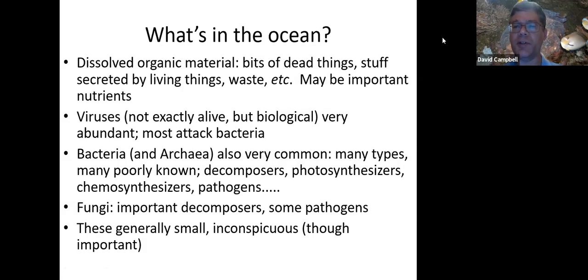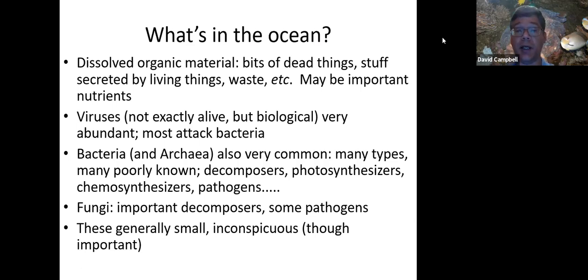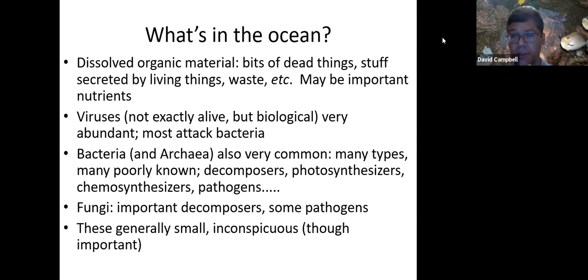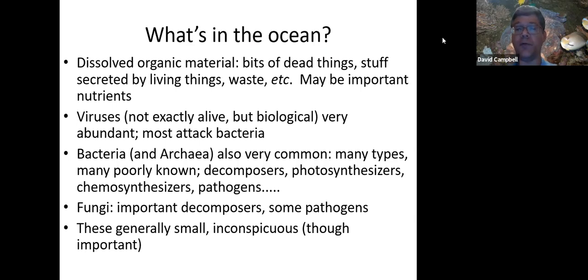What sorts of biological stuff is there in the ocean? As we already noted with seawater, there's a variety of dissolved organic things in the water from decay, chemicals released by living things, the waste, stuff like that. These can potentially be important food sources for other types of living things. A number of ocean animals are able to absorb these — of course a major source of nutrients for a variety of bacteria and things like that in the ocean.